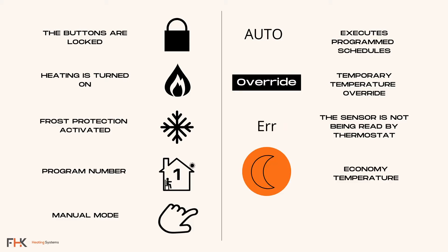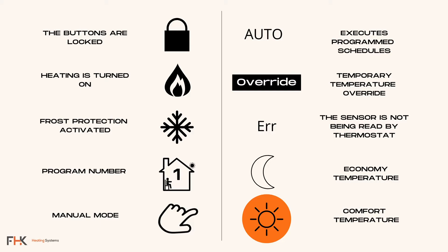The moon symbol means the unit is operating in economy mode. Economy mode means your floor will only turn on when the temperature falls below the minimum temperature you have set. The sun symbol means the unit is currently operating in comfort mode, where the floors are heated at your preferred temperature you have set.